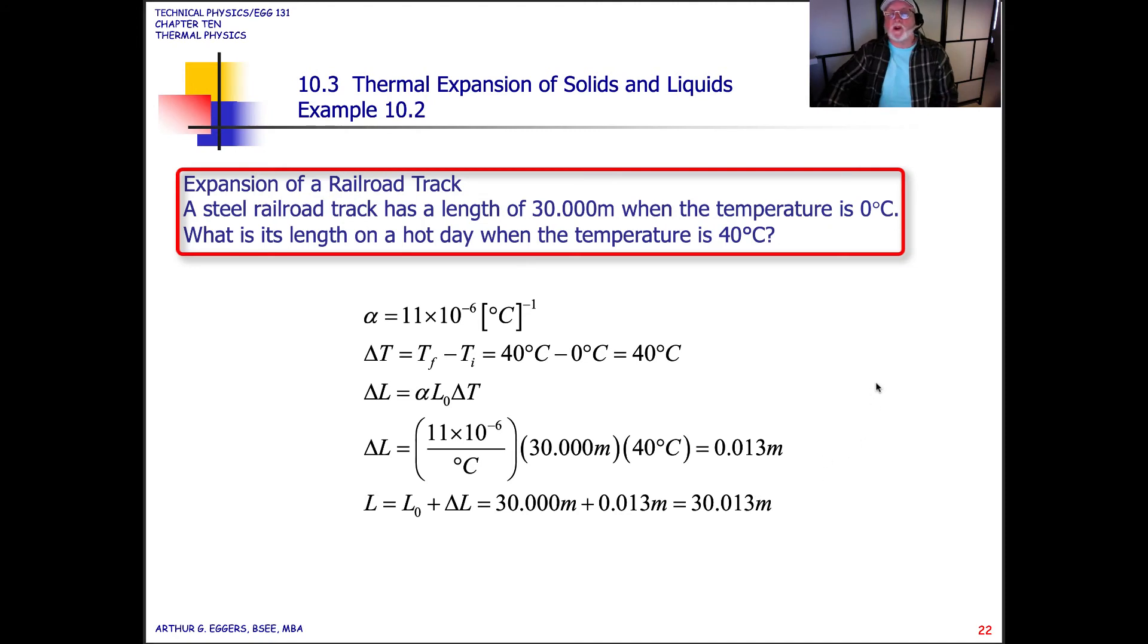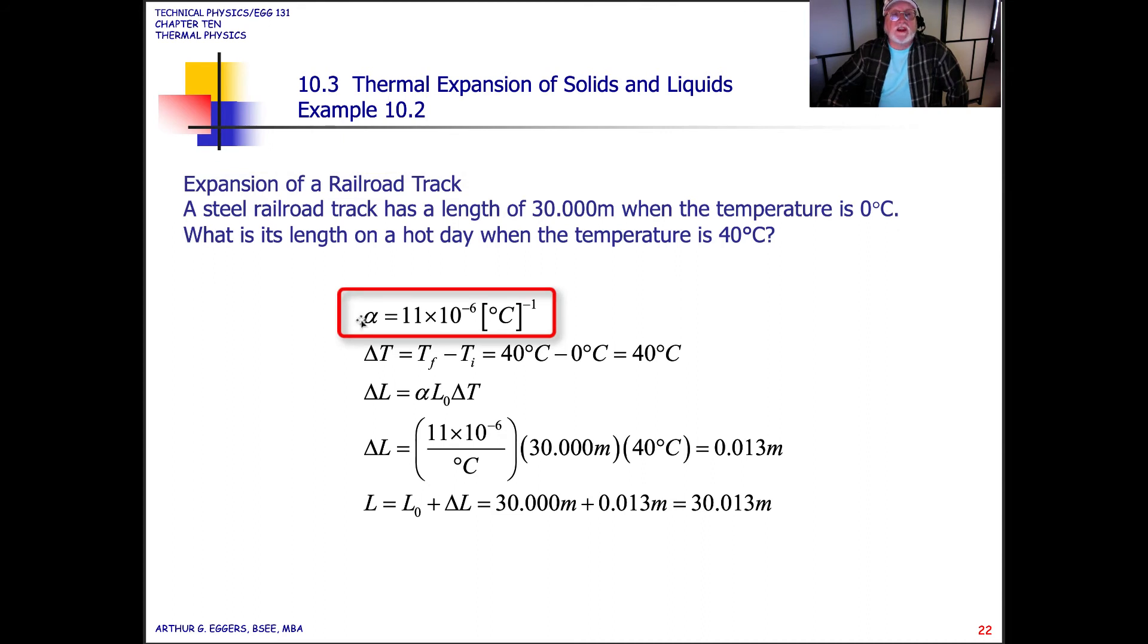So let's take one quick example here before we stop. We're looking at expansion of a railroad track. A steel railroad track has a length of 30 meters. Notice we carried it out to three places. You should be getting used to this. When the temperature is zero degrees Celsius, so we're at the freezing point. What is the length on a hot day when the temperature is 40 degrees Celsius?